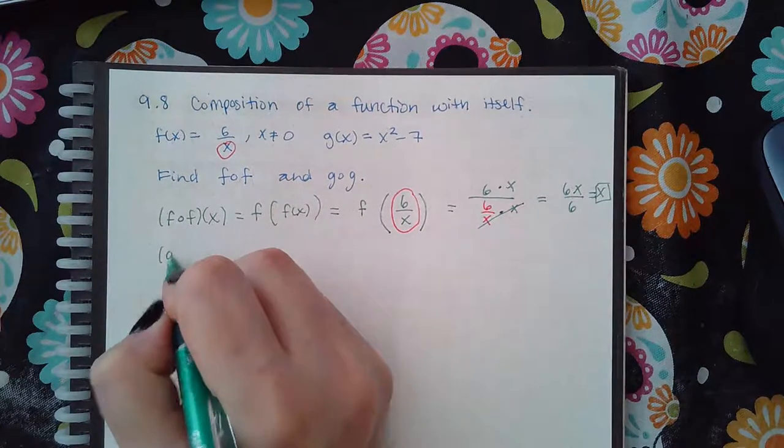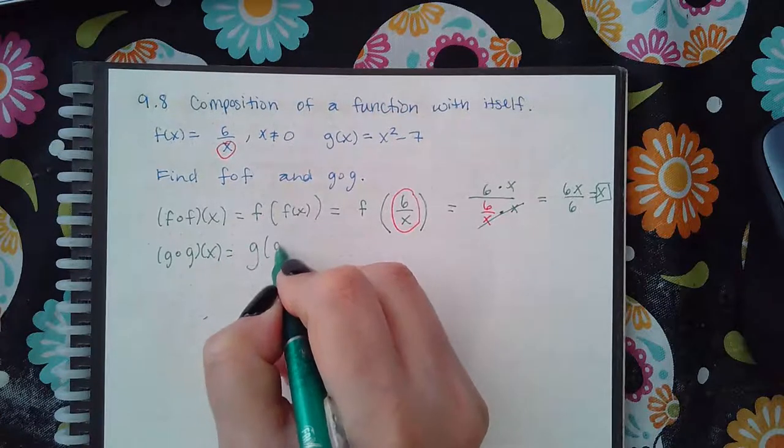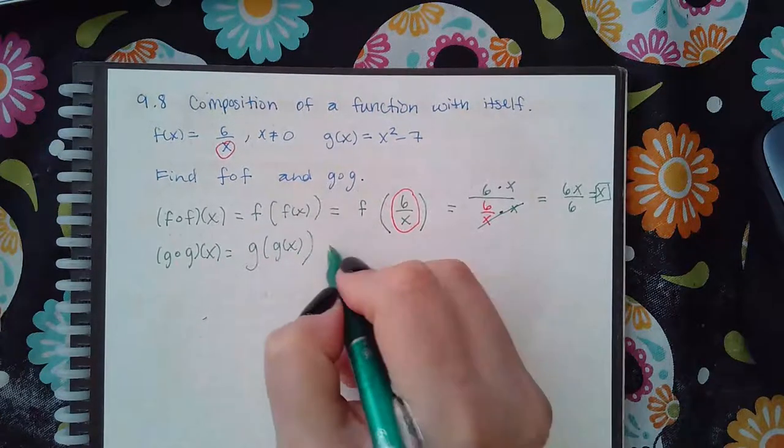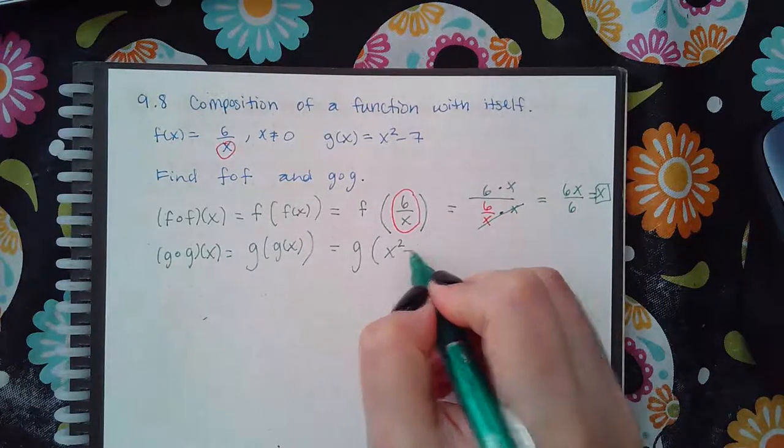Now for g of g, put g on the outside, and then you put g of x on the inside. And so what is g of x? g of x is x squared minus 7.